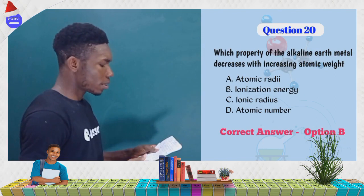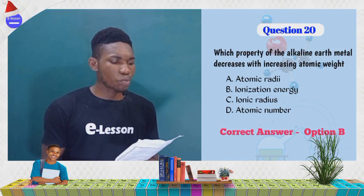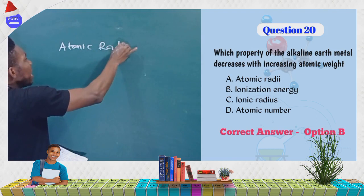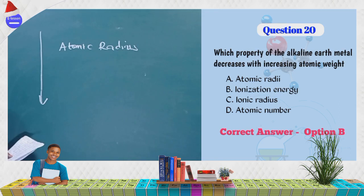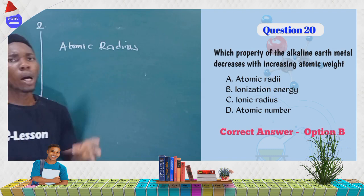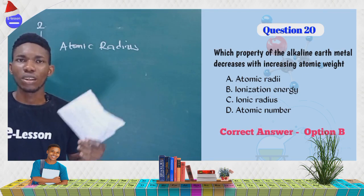Next question: which property of alkaline earth metals decreases with increasing atomic weight? The alkaline earth metals are the Group 2 elements. We need to identify which periodic trend decreases as you go down the group.